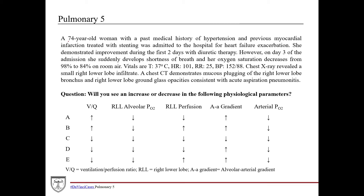For this case, we have a 74-year-old woman with a past medical history of hypertension and a previous myocardial infarction treated with stenting, now admitted to the hospital for a heart failure exacerbation. Having a previous MI is a common cause for heart failure — it's called ischemic cardiomyopathy — meaning the heart underwent ischemia and now doesn't pump as efficiently.